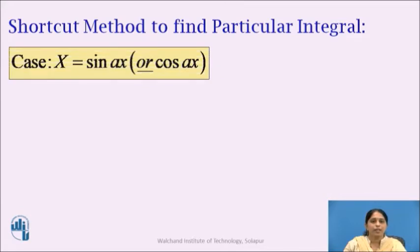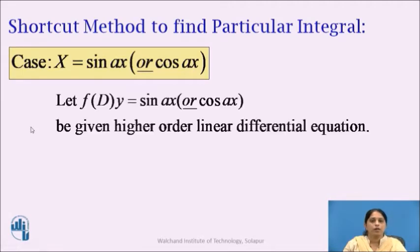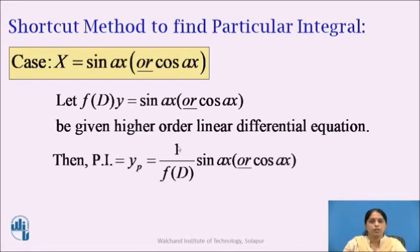Today we are going to see the shortcut method to find the particular integral. For the case where capital X, that is the right hand side, is sin x or cos x — that means the equation is of the form f(d) of y equals to either sin x or cos x — we are going to see how to find the particular integral. Let f(d) of y equals to sin x or cos x be the given higher order linear differential equation. Then the particular integral yp is given as 1 upon f(d) into sin x or cos x.